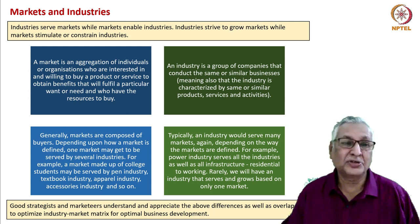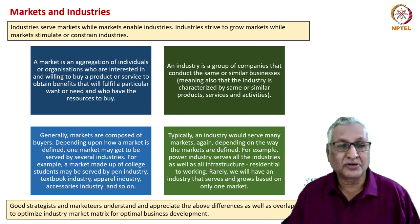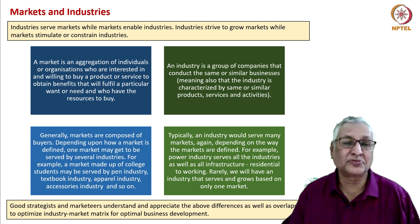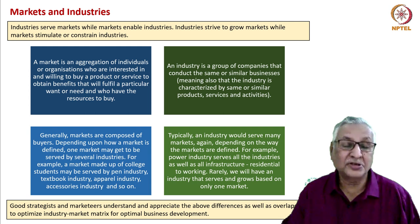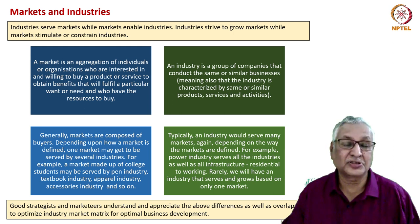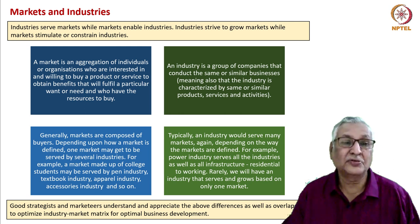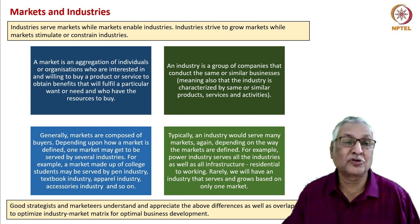A market is an aggregation of individuals or organizations who are interested and willing to buy a product or service to obtain benefits that fulfill a particular want or need, and these individuals or organizations have the resources to buy. So there are three to four underlying concepts: aggregation, interest, willingness to pay, and resources to secure benefits.